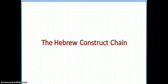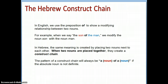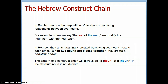Welcome to our Hebrew 131 lecture on the Hebrew Construct Chain. In English, we use the preposition 'of' to show a modifying relationship between two nouns. For example, when we say 'the son of the man,' we modify the noun 'son' with the noun 'man.' In Hebrew, the same meaning is created by placing two nouns next to each other, creating what we call a construct chain.